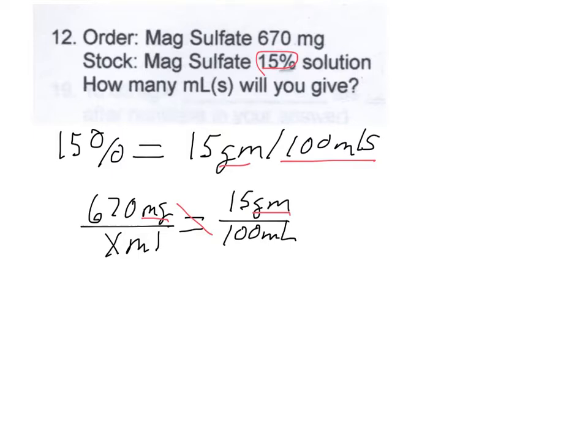It's easy enough to do, you just multiply 15 times 1,000 and that will give you milligrams. So 15 times 1,000 is 15,000. Now we're going to cross multiply and divide.